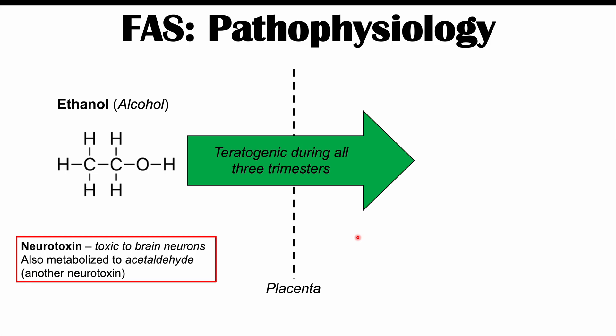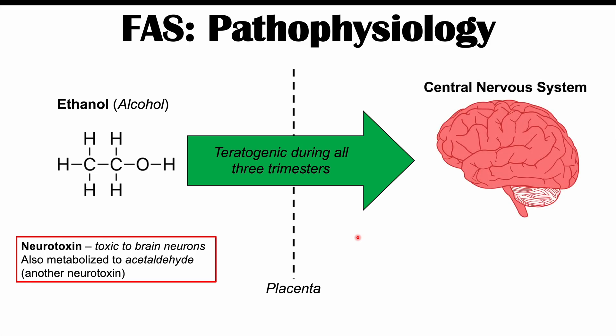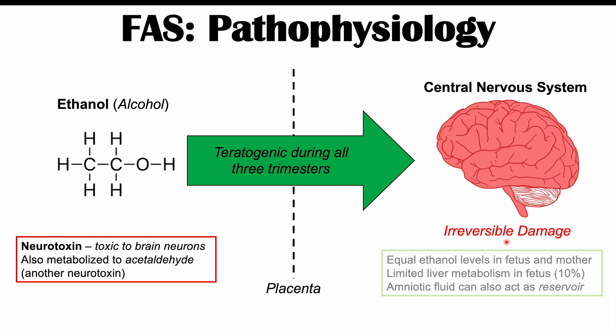One of the most important areas affected is the central nervous system, where ethanol and acetaldehyde cause irreversible damage to brain neurons. The fetus has equal ethanol levels to the mother, and the fetus relies almost exclusively on the mother's liver for ethanol metabolism — only about 10% is processed by the fetus itself. The amniotic fluid can also act as a reservoir for ethanol and acetaldehyde, continuing to expose the fetus even after maternal consumption stops.